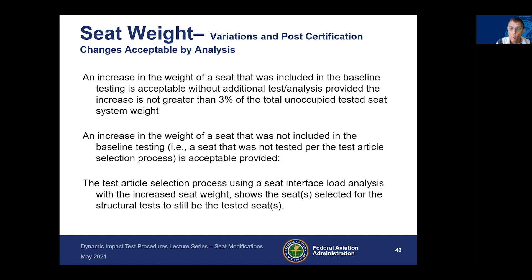If you had two seats in your seat family — one tested and one not — for the one that was tested, you can allow up to 3% of the unoccupied test system weight without a retest. For the one that was not tested, you have to conduct an analysis showing that the increased seat weight does not now make it a critical case that should have been tested.